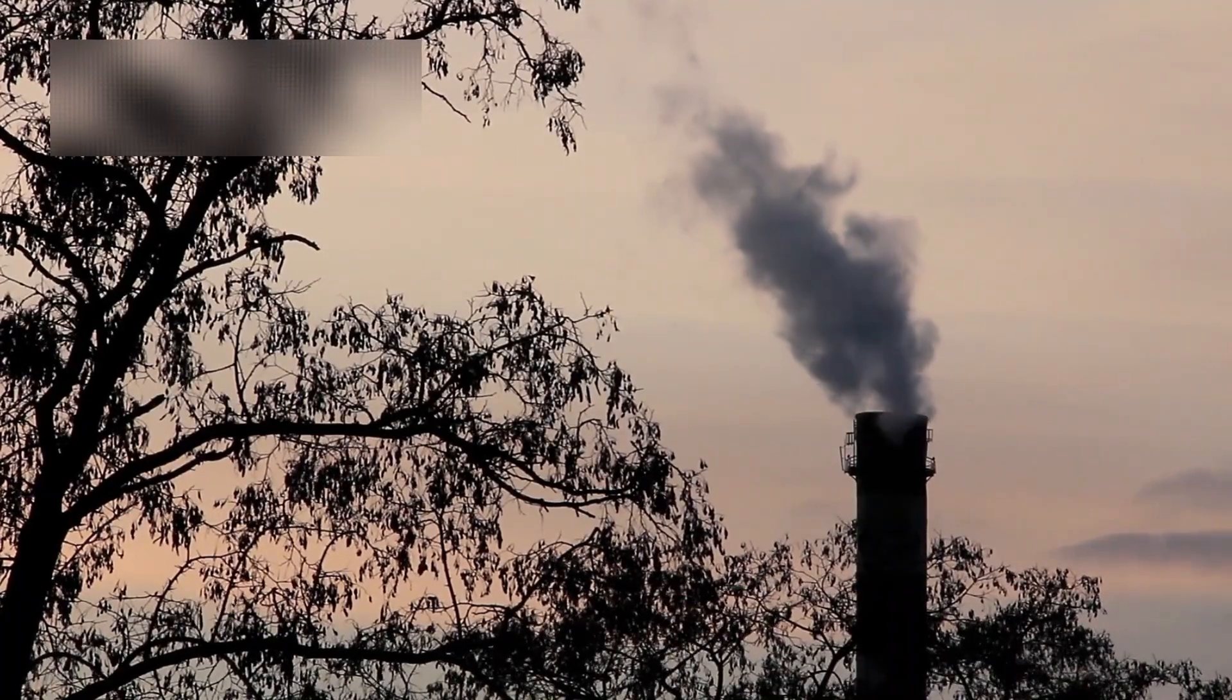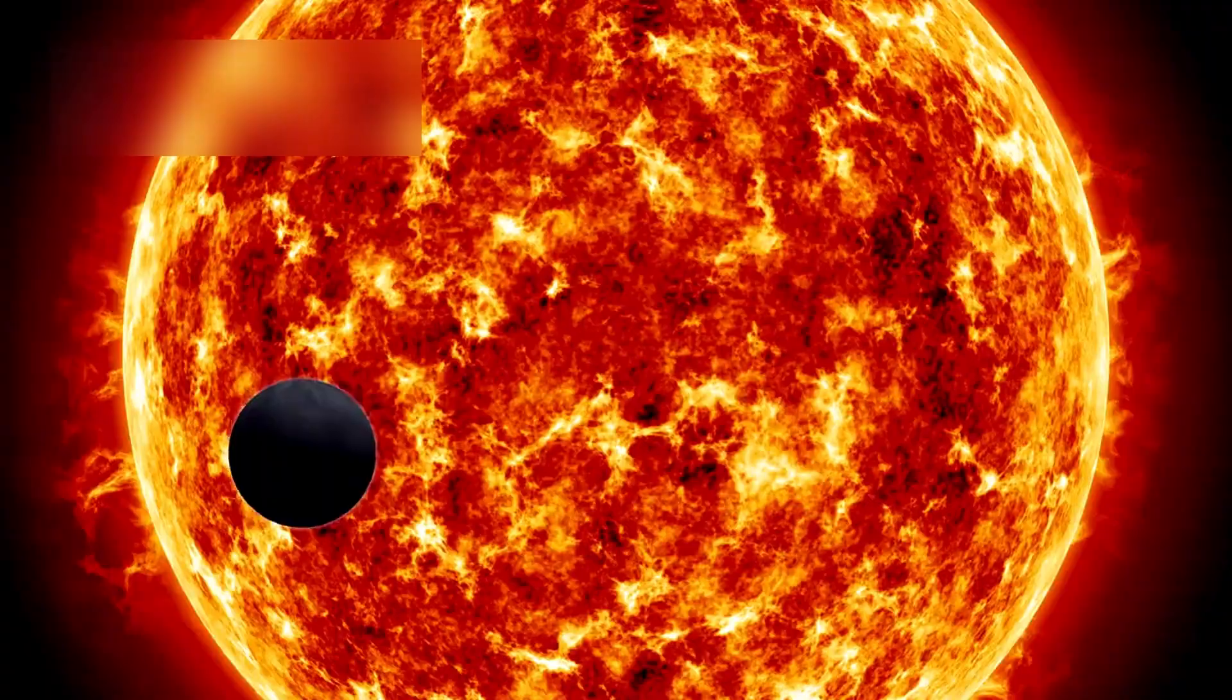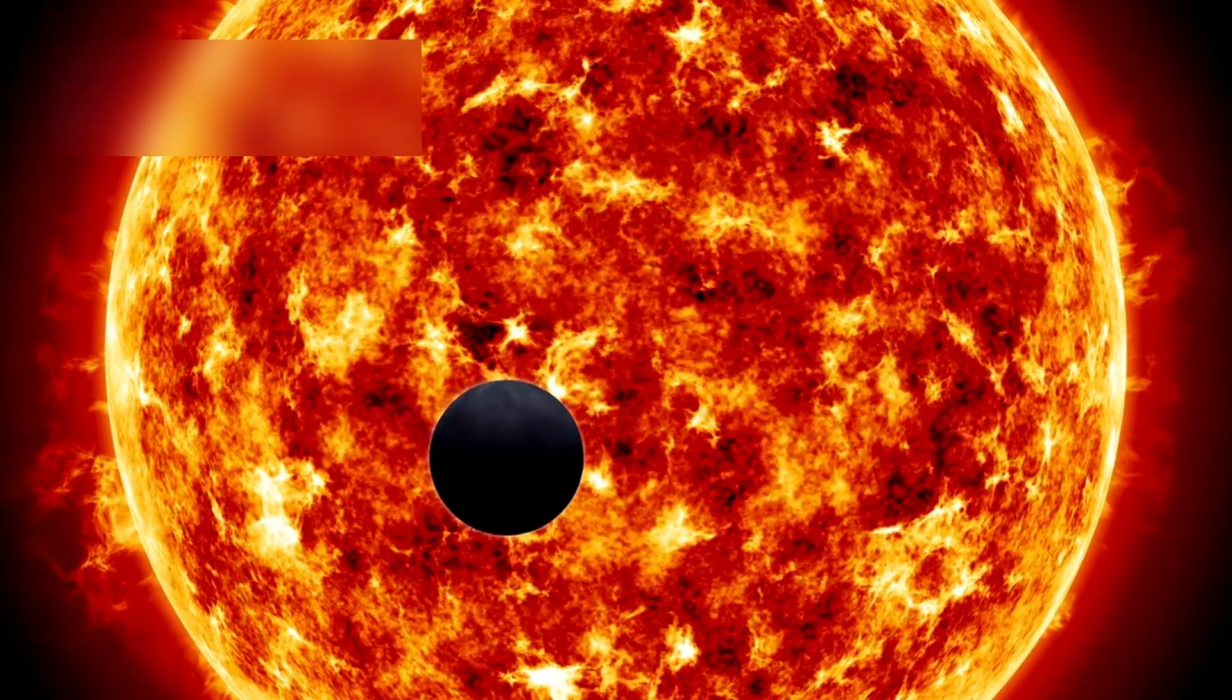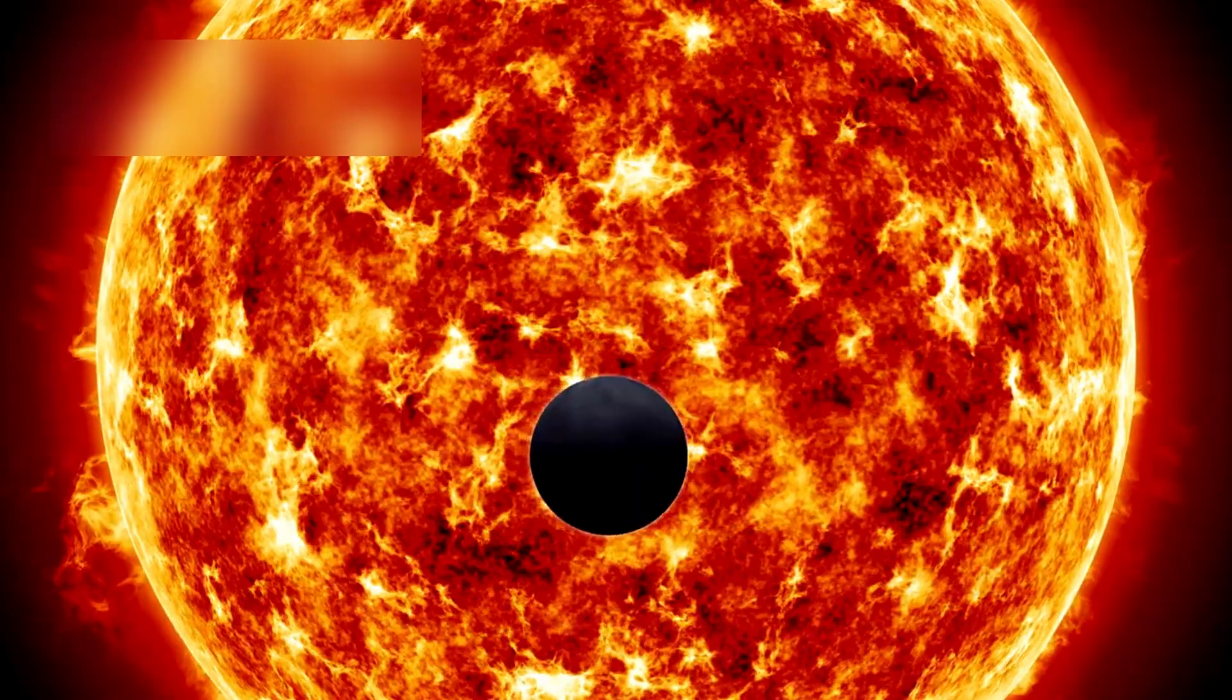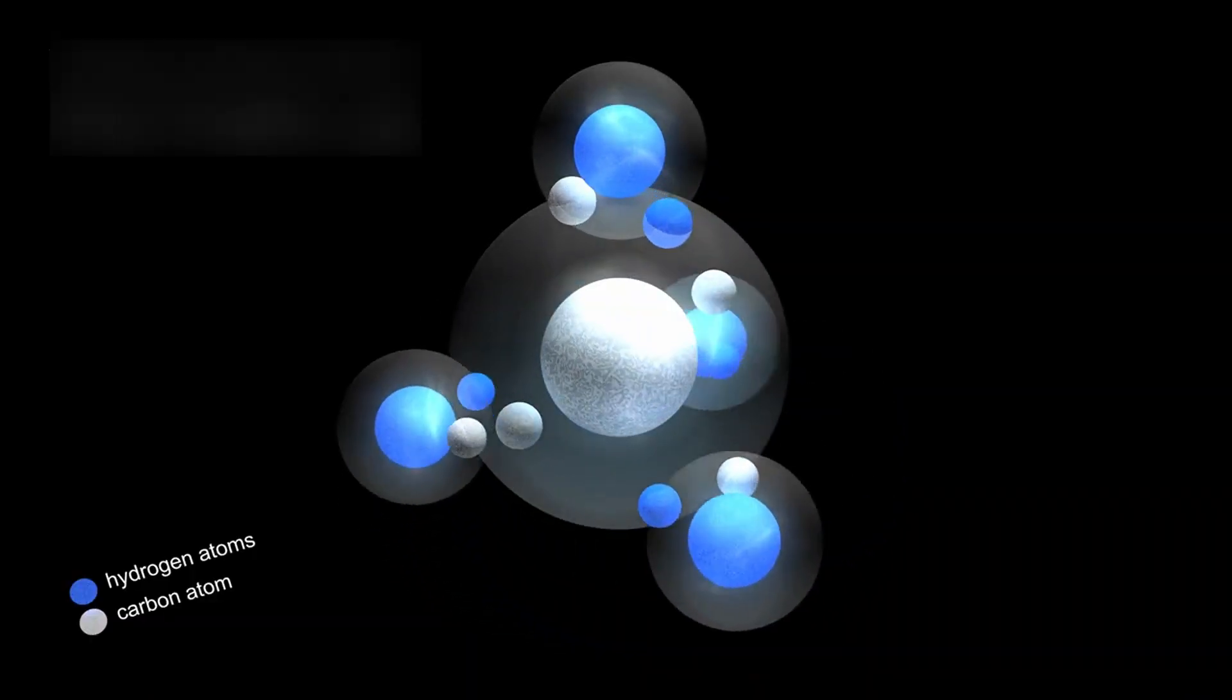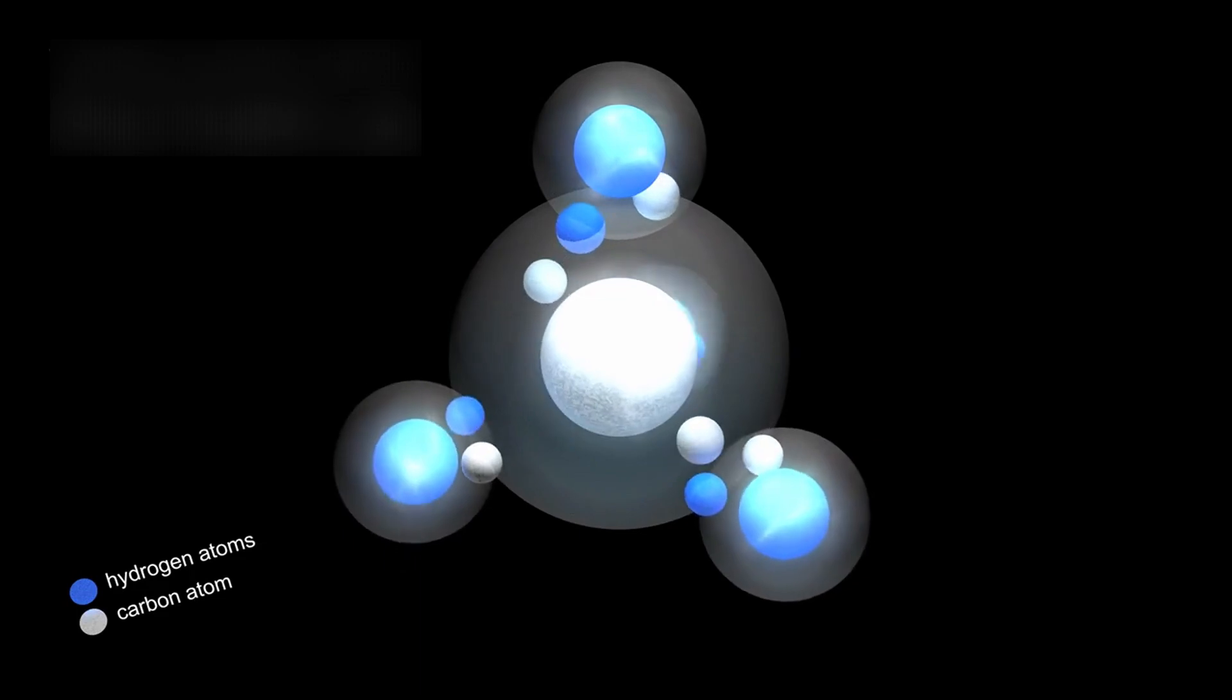Clues also come from atmospheric chemistry. By analyzing starlight that filters through a planet's atmosphere, astronomers can detect gases associated with biology. Webb is especially sensitive to water vapor, methane, and carbon dioxide.